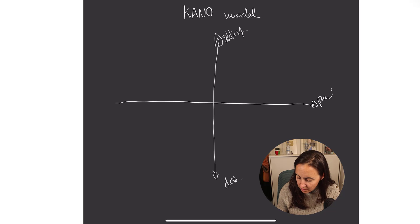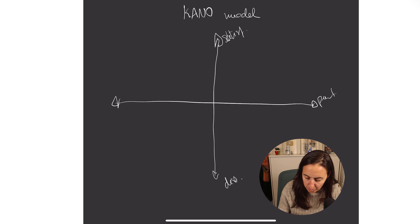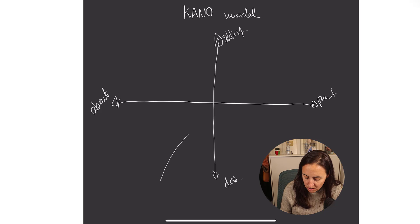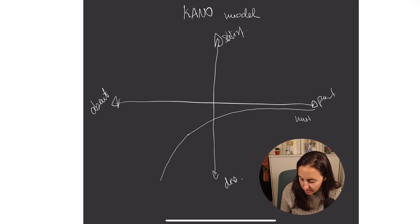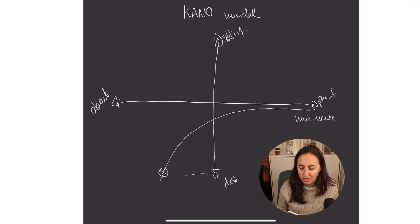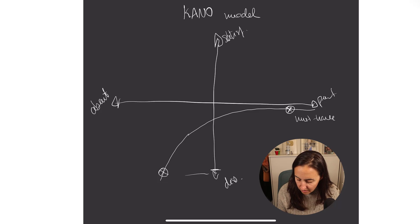And then this axis represents features that are present, and these are features that are absent. So the theory goes like this — it's actually pretty straightforward. If you have features that are missing and people consider them as must-haves, then you're going to find that people will be extremely dissatisfied. We're at the bottom of the chart here — customer dissatisfaction. They will be super dissatisfied. Now, if you actually deliver them and put them there...